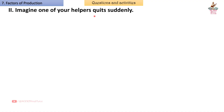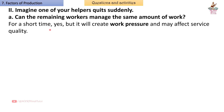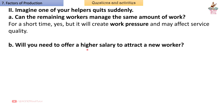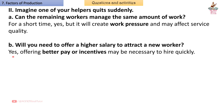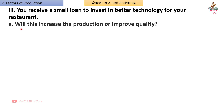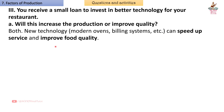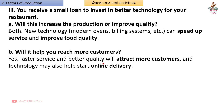Second, if one of your helpers quits suddenly: Can the remaining workers manage the same amount of work? Answer: For a short time yes, but it will create work pressure and may affect service quality. Will you need to offer a higher salary to attract a new worker? Answer: Yes, offering better pay or incentives may be necessary to hire quickly. Third, you receive a small loan to invest in better technology for your restaurant: Will this increase production or improve quality? Answer: Both — new technology like modern ovens and billing systems can speed up service and improve food quality. Will it help you reach more customers? Answer: Yes, faster service and better quality will attract more customers, and technology may also help start online delivery.